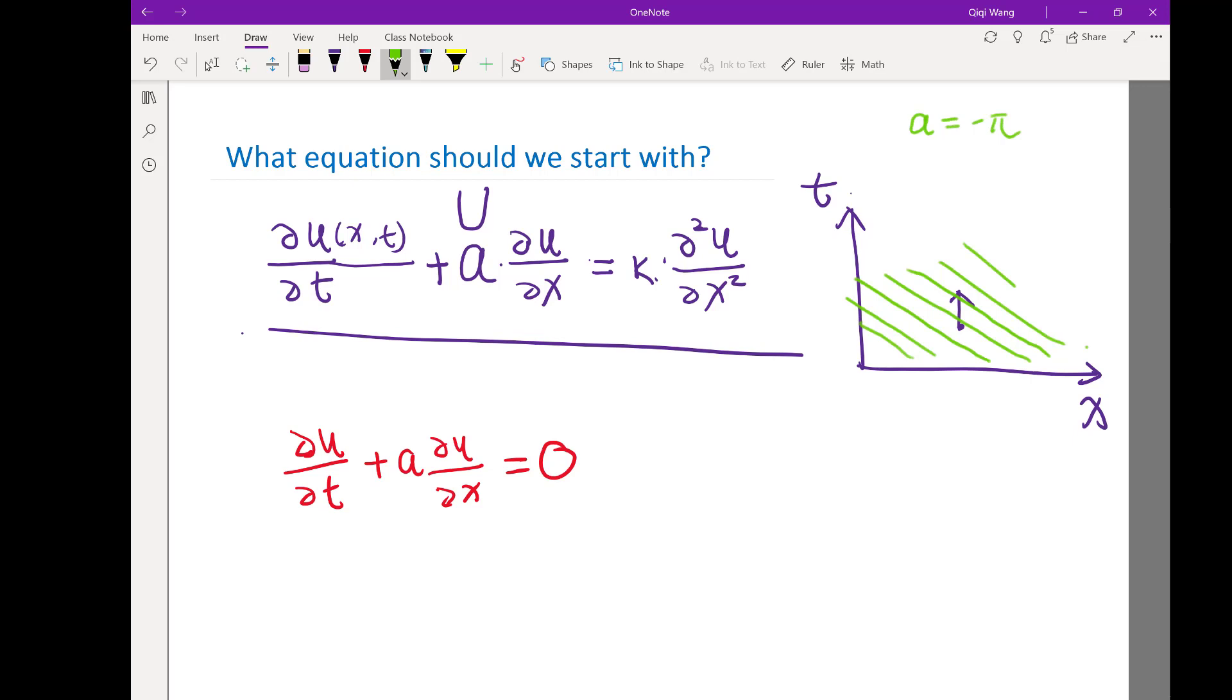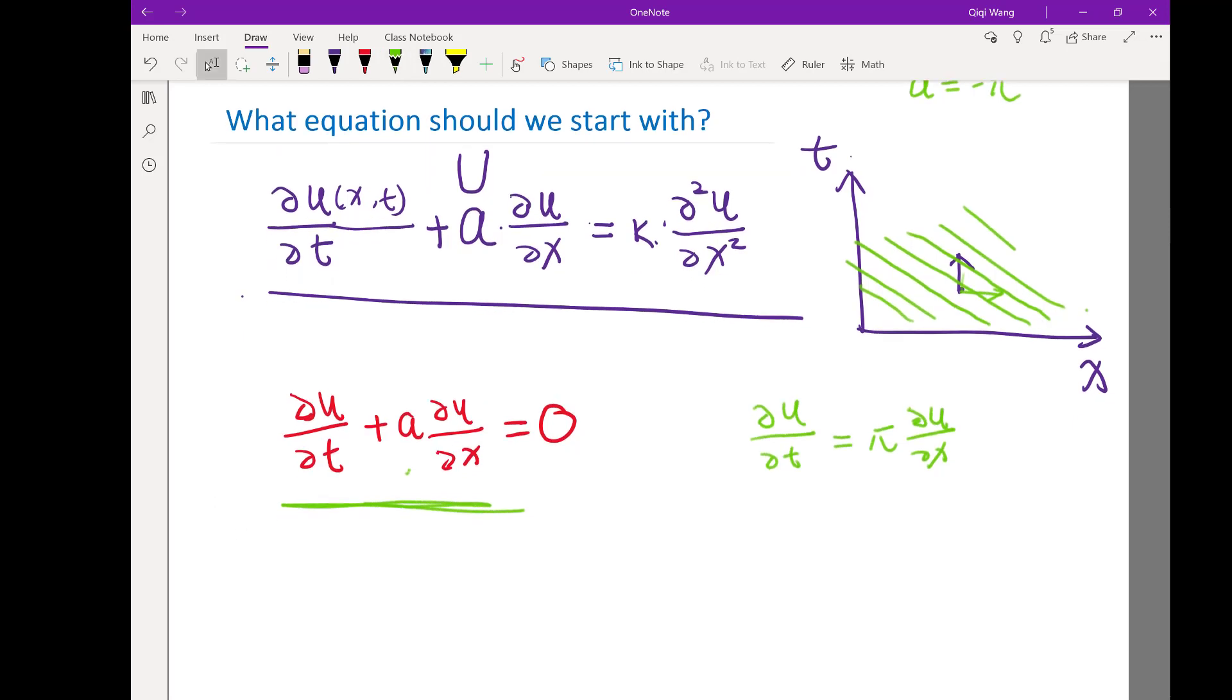Does that make sense for this partial differential equation? It does, right? Because if a is negative π, that means ∂u/∂t equals π times ∂u/∂x. So ∂u/∂t is equal to π times ∂u/∂x. If you take the derivative in this direction, it's proportional to the derivative in that direction.